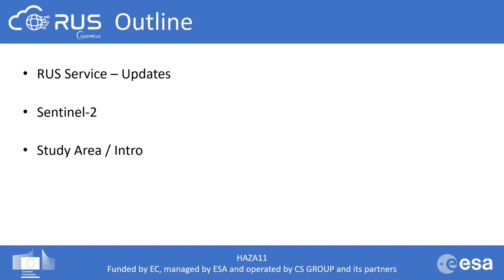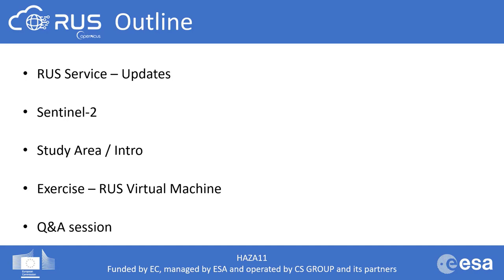We will first have a quick introduction about the RUSH service and what this project is about, followed by some updates. We will talk about the Sentinel-2 satellite, continue with a short introduction about the study area, and then move to the exercise in the RUSH virtual machine. Finally, a Q&A session will follow at the end. The webinar will last around one to one and a half hours including both the demonstration part and the Q&A session.